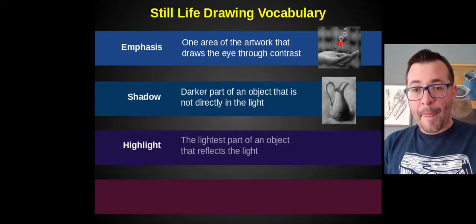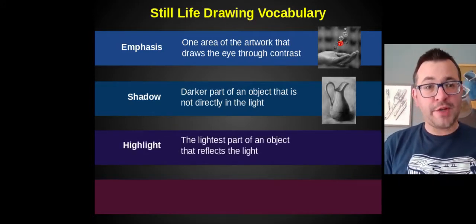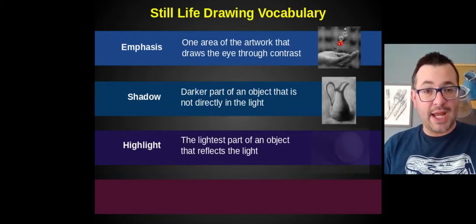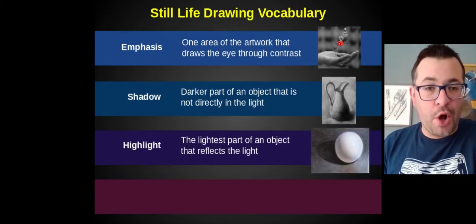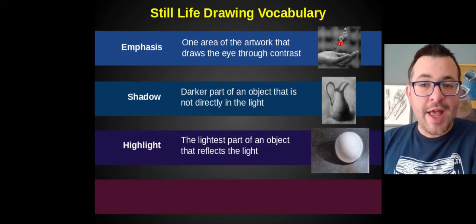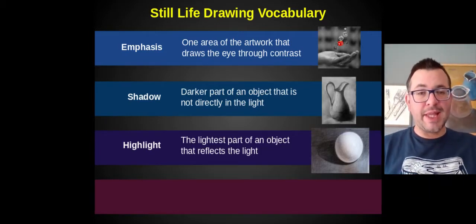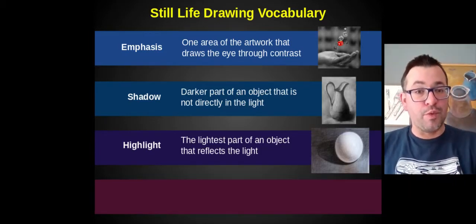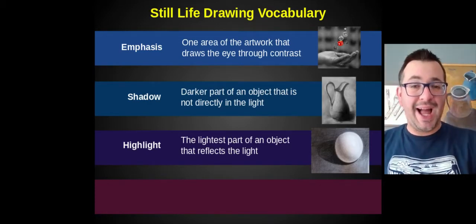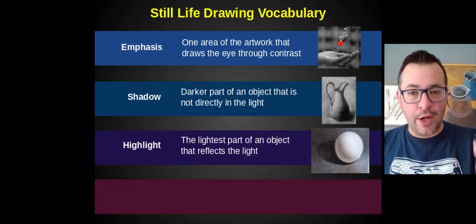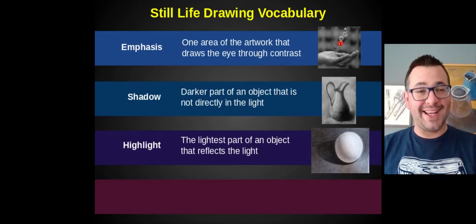The highlight is the lightest part of an object. It's where it's reflecting the light. If you look here at the ball that's drawn in this image, that highlight is on the top right because the light in this drawing is coming from the right side. The highlight is the lightest part of the object. That's what's reflecting the light.